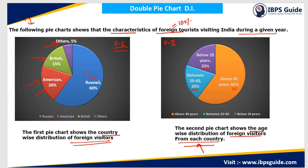So for all countries, 20% of the total population of Russian visitors are between 20 to 40 years of age. Similarly, 20% of the total foreign visitors from America is between 20 to 40 years. Likewise for British as well — 20% of their total foreign visitors is in the 20 to 40 years age group. This age-wise distribution applies for all countries. Now that you understand this, let's move on to our questions.